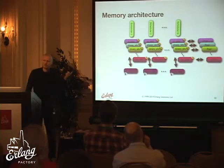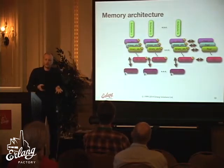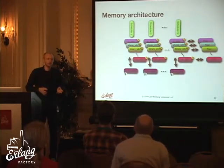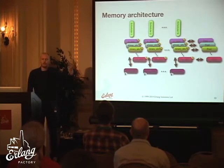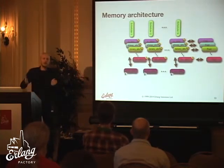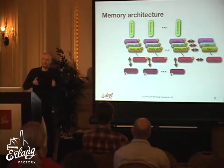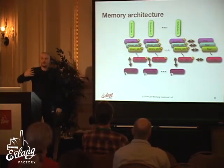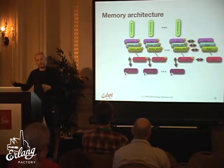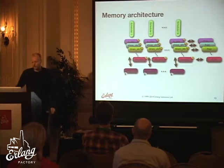In R16B02, we added a carrier pool shared between different schedulers. You get access to this if you use the carrier-oriented algorithms. The pool gets populated by carriers below a certain utilization percentage — if a carrier on scheduler N has only 20% utilization, that scheduler can give it to the pool. If scheduler 1 needs a new carrier, it can take from the pool rather than requesting from the OS. You lose some NUMA locality but get better memory utilization.